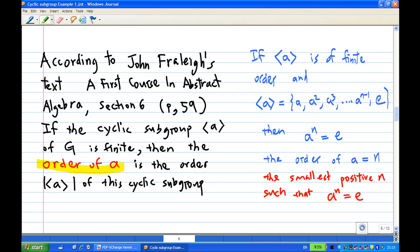That means if the cyclic subgroup generated by A is A, A squared, A cubed, all the way until A to the N minus 1, and then the last element is E, which is A to the power N, then the order of A is N. This is the smallest positive integer N such that A to the power N equals E.